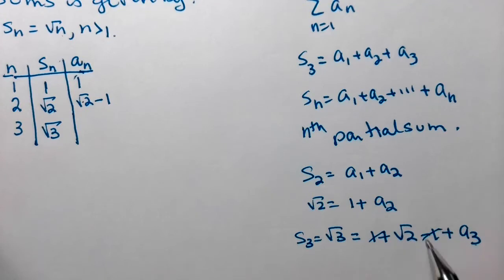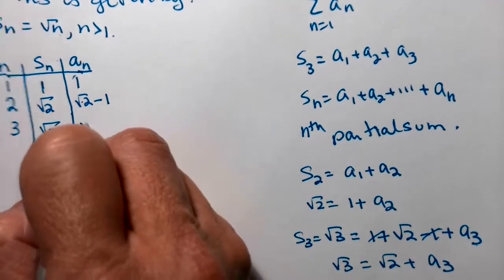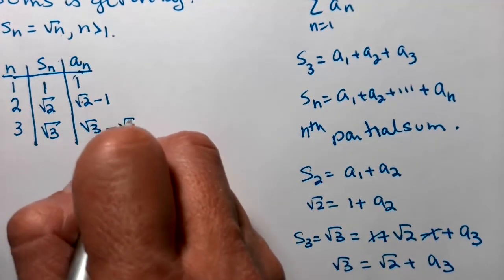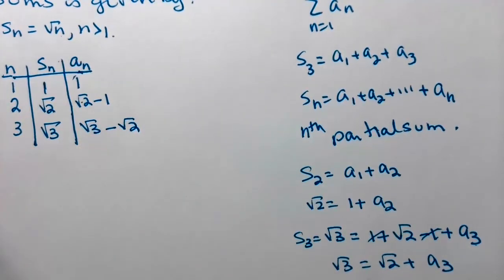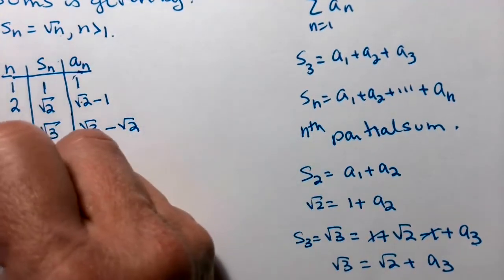What does a sub 3 have to be? So these guys add away, and now I have square root of 3 equal square root of 2 plus a sub 3. So a sub 3 is going to be the square root of 3 minus the square root of 2. I'm starting to see a pattern.